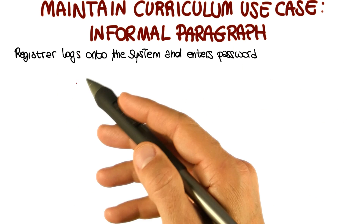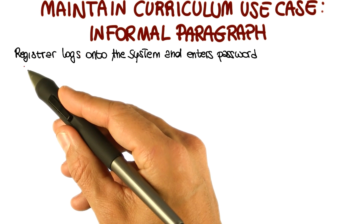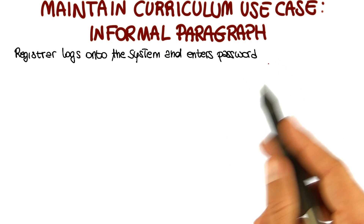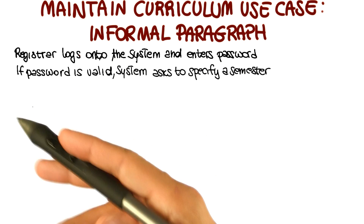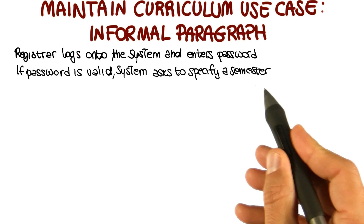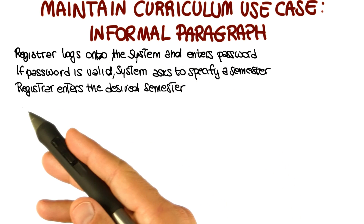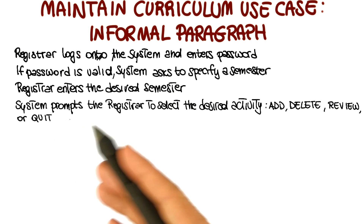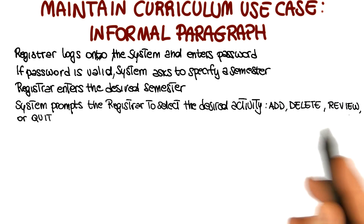In my case, because the description mentioned that every user has a login and a password, I decided the first step should be that the registrar logs onto the system and enters his or her password. As normally happens with password-protected systems, if the password is valid, the registrar will get into the system. The system should then ask the registrar to specify a semester for which the maintain curriculum activity has to be performed. The registrar will enter the desired semester, and the system will prompt the registrar to select the desired activity: add, delete, review, or quit.